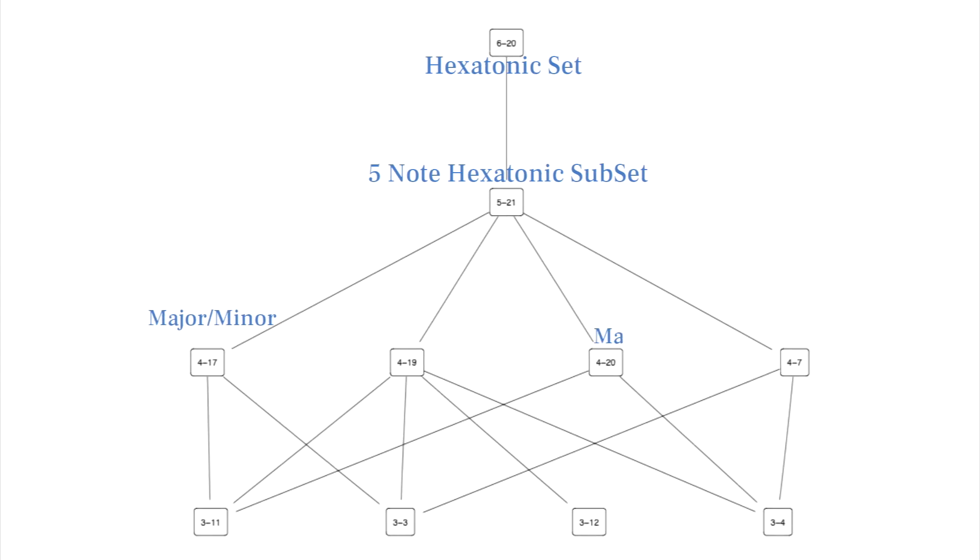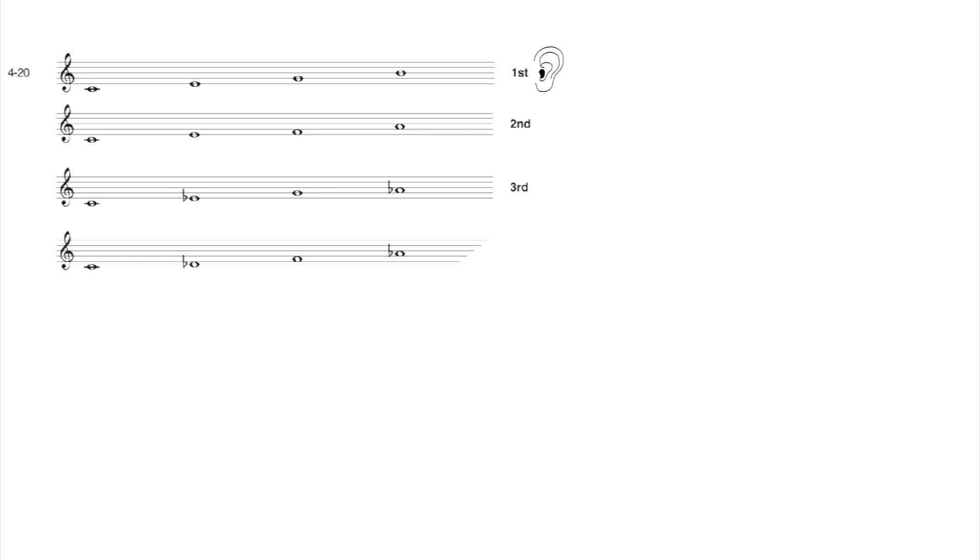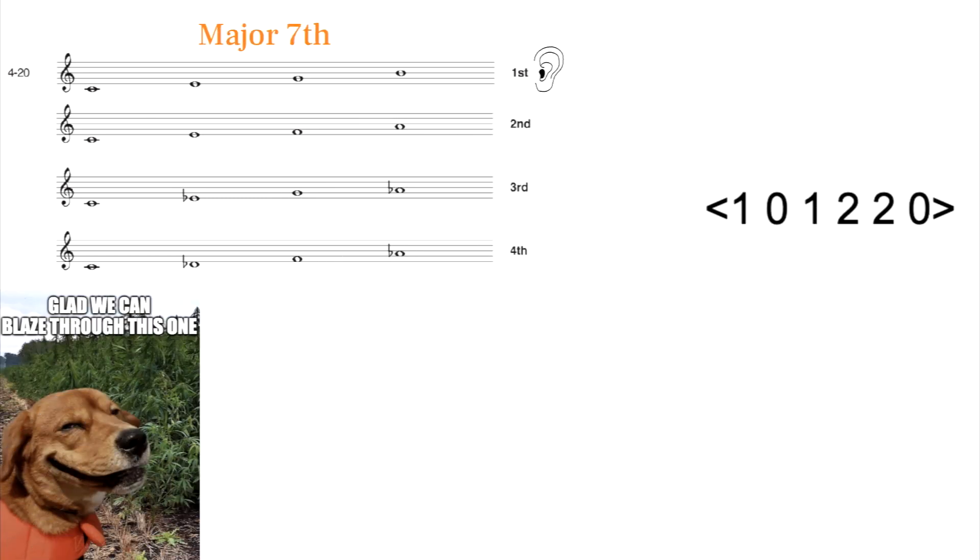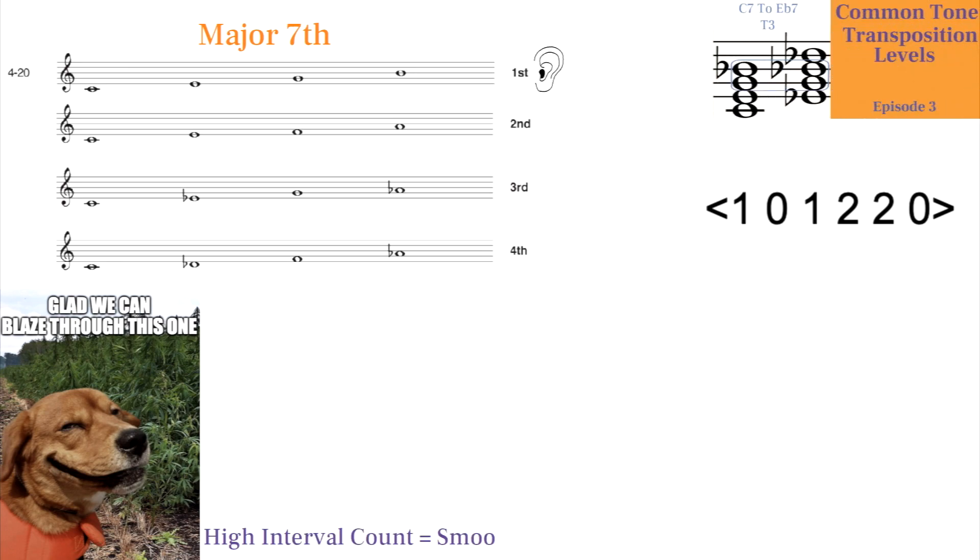The 420 set is the major 7th chord set. I don't think I need to show a musical example of it being used, but it's worth pointing out its interval content. I have a video on how the intervals that make up sets relates to how smooth chord changes sound at the transposition levels of those intervals.